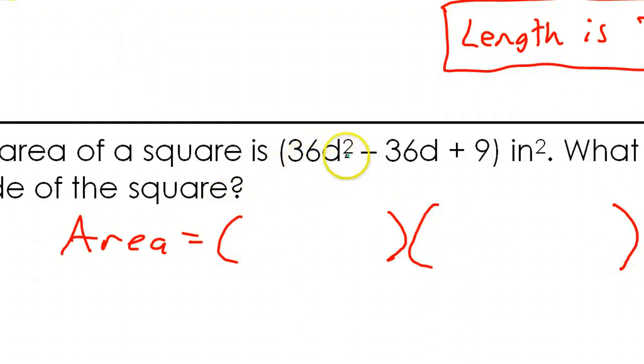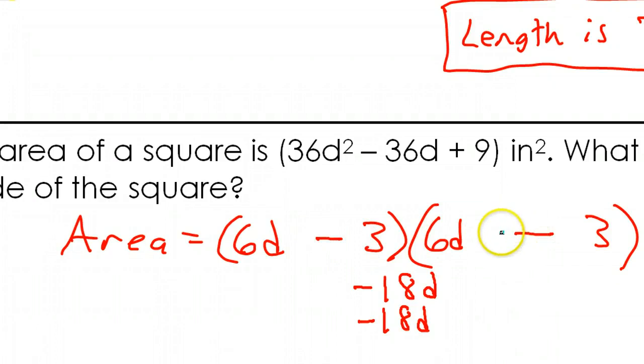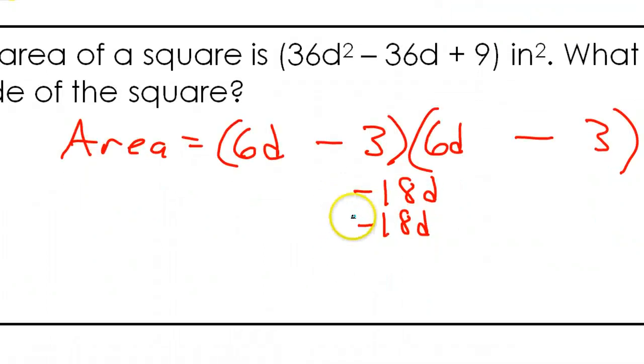Let me make it a little bit bigger. So 36d². It has to be the same thing twice, so it has to be 6d times 6d. That's the only way for it to be the same. 9, that's a perfect square, luckily. It has to be 3 times 3. Now the inner plus the outer has to be the middle. Inner, I have 18d. Outer, I have another 18d. This will make negative 36d if both of these are negative. Negative 18 plus negative 18 is negative 36. So that means both of these will be negative. It also gives me a positive 9 because negative times negative is positive. So that's it. That means the length of both sides are 6d - 3.